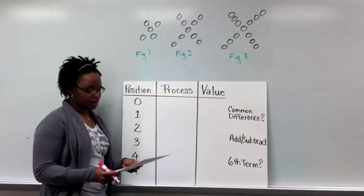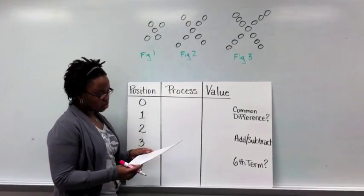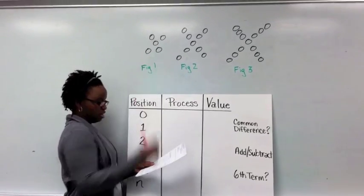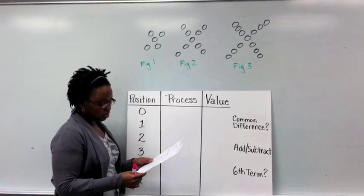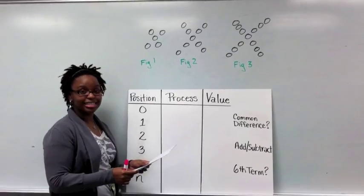Alright guys, let's look at problem number 2. It states x1 requires 5 pebbles. Use a table to develop a rule for the number of pebbles for any size x.